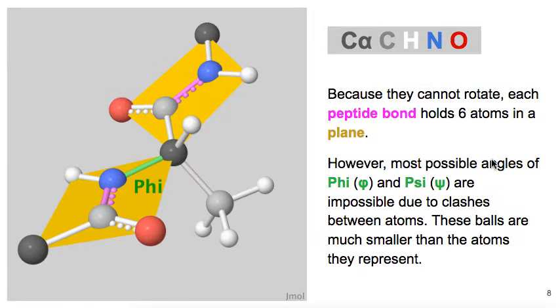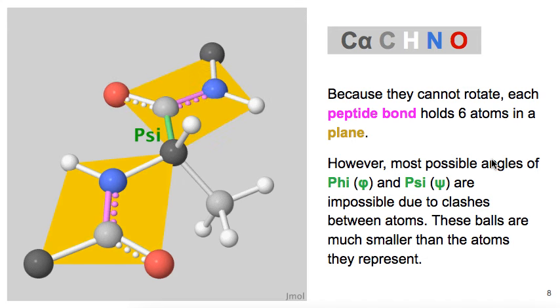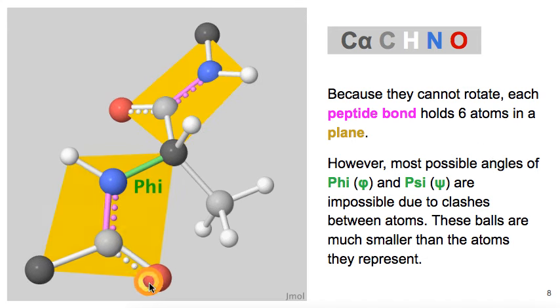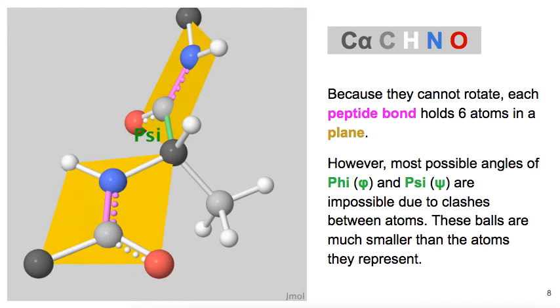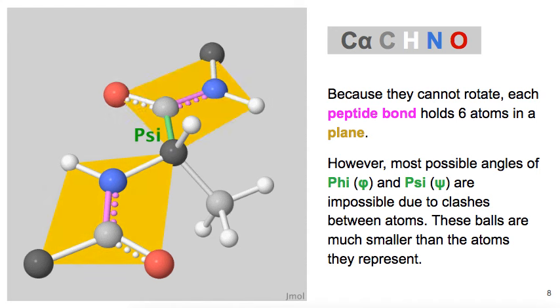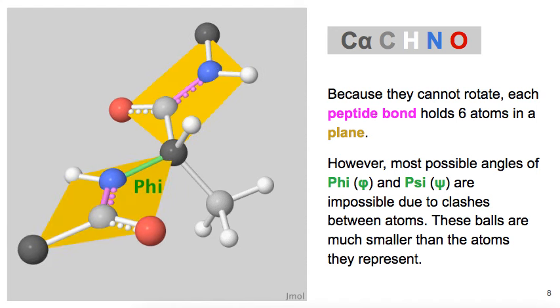Peptide bonds have a double bonded character. This prevents them from rotating. They have this character because they resonate with the adjacent oxygen double bond. As a result of their inability to rotate, each peptide bond holds six atoms in a plane.